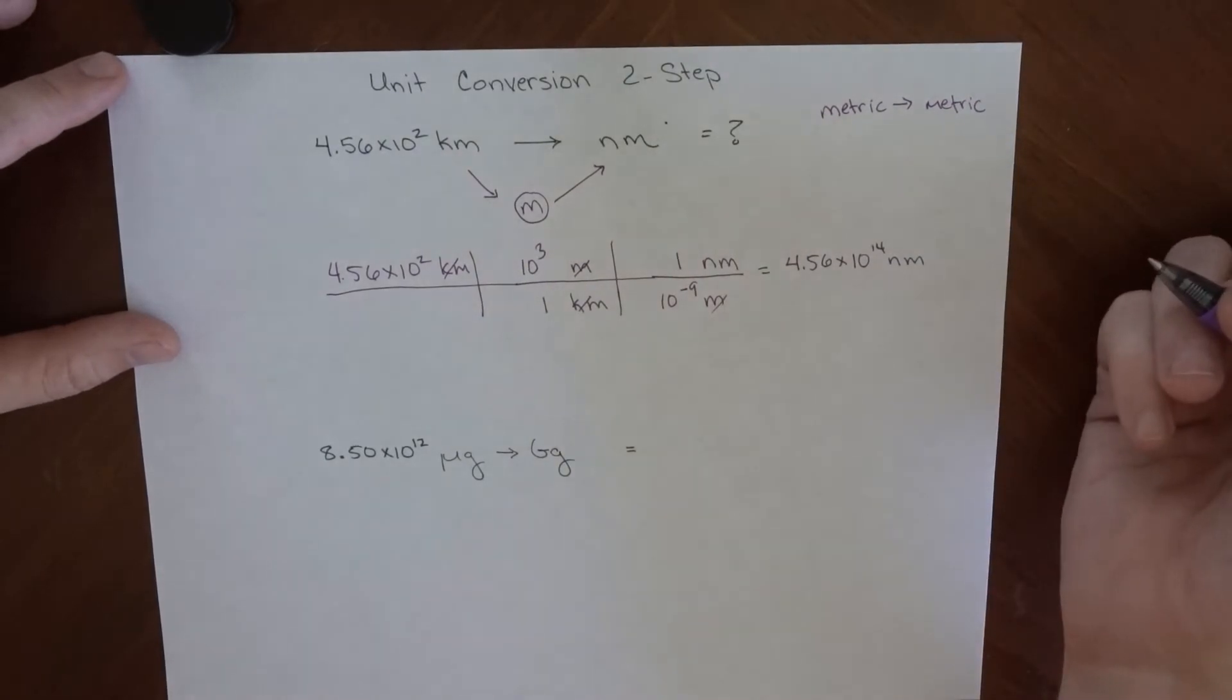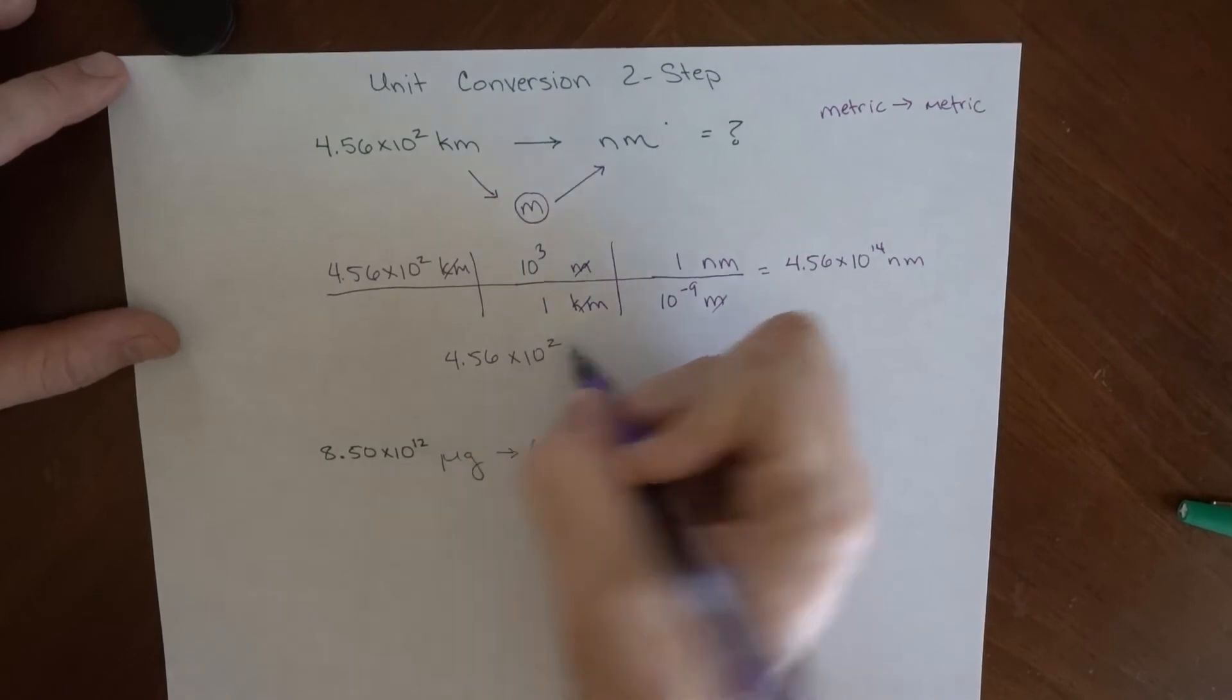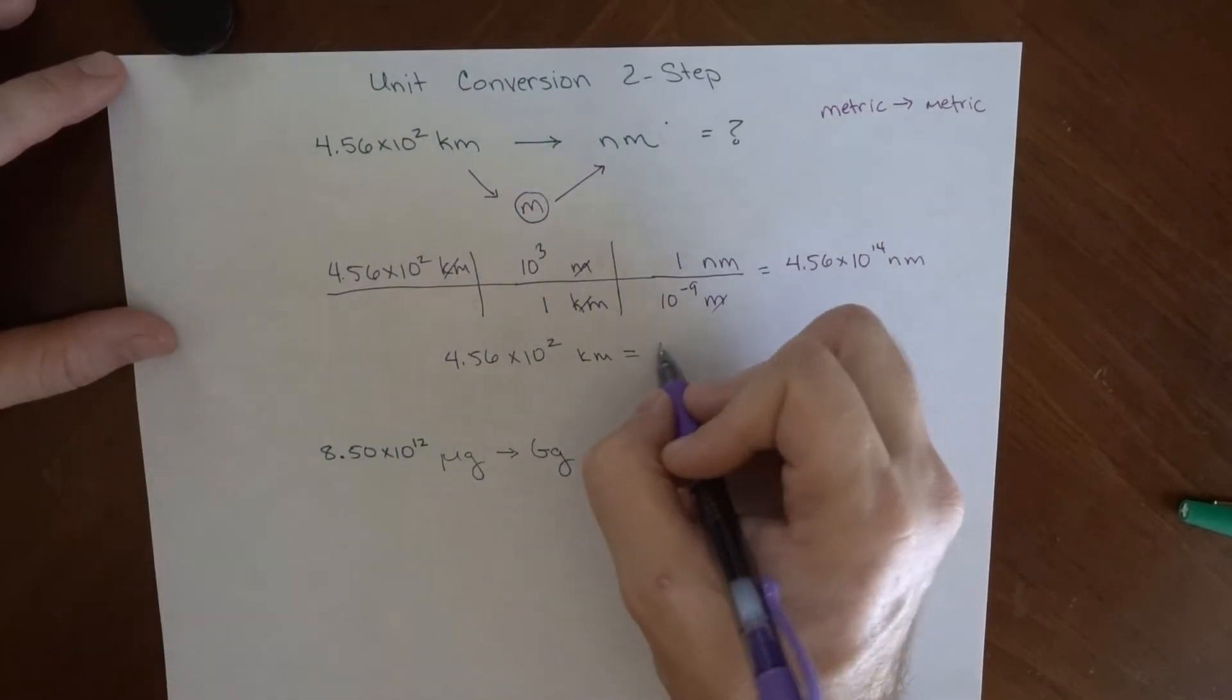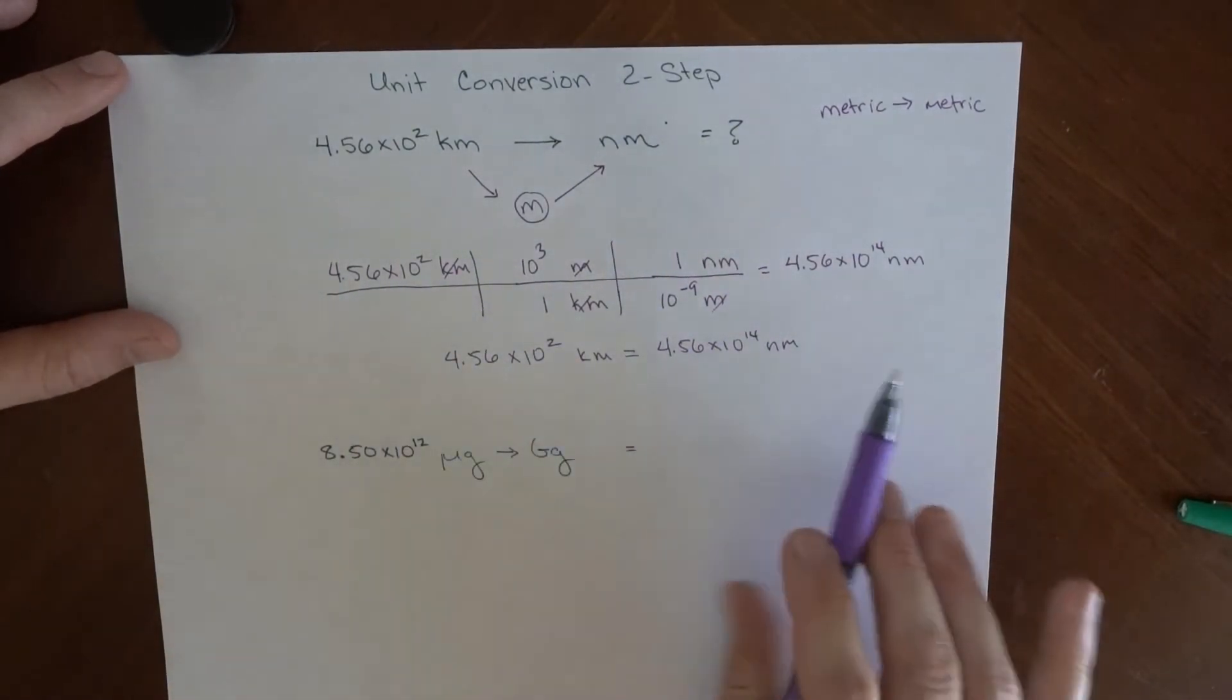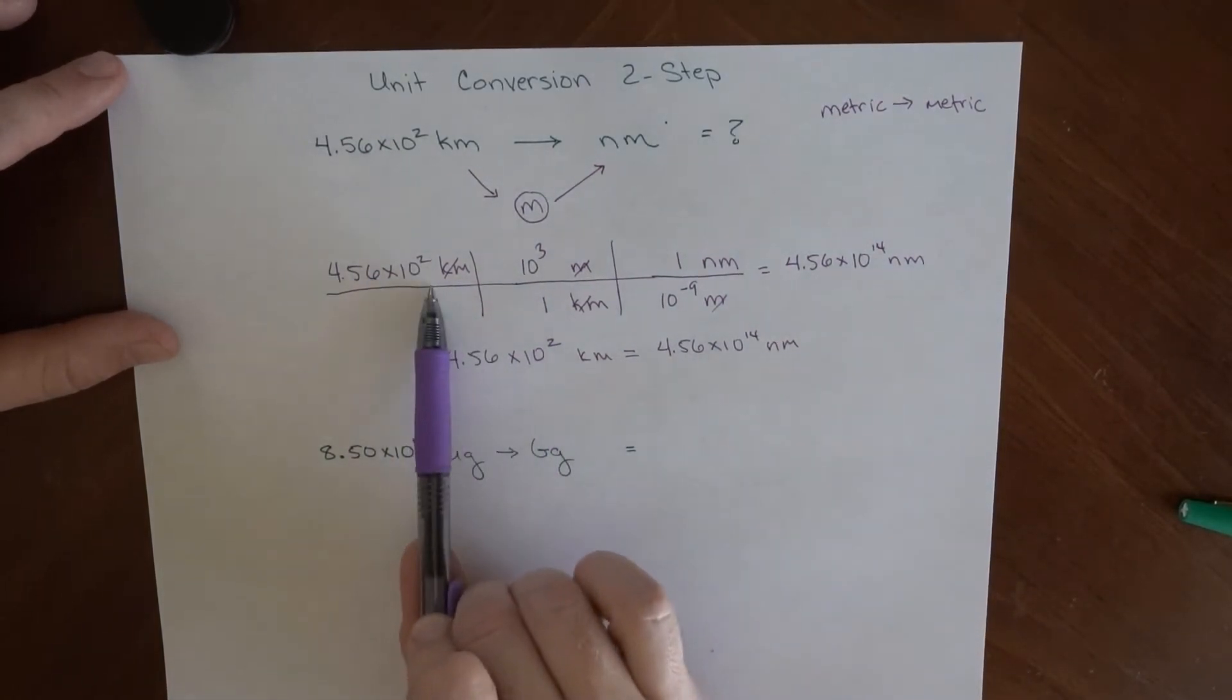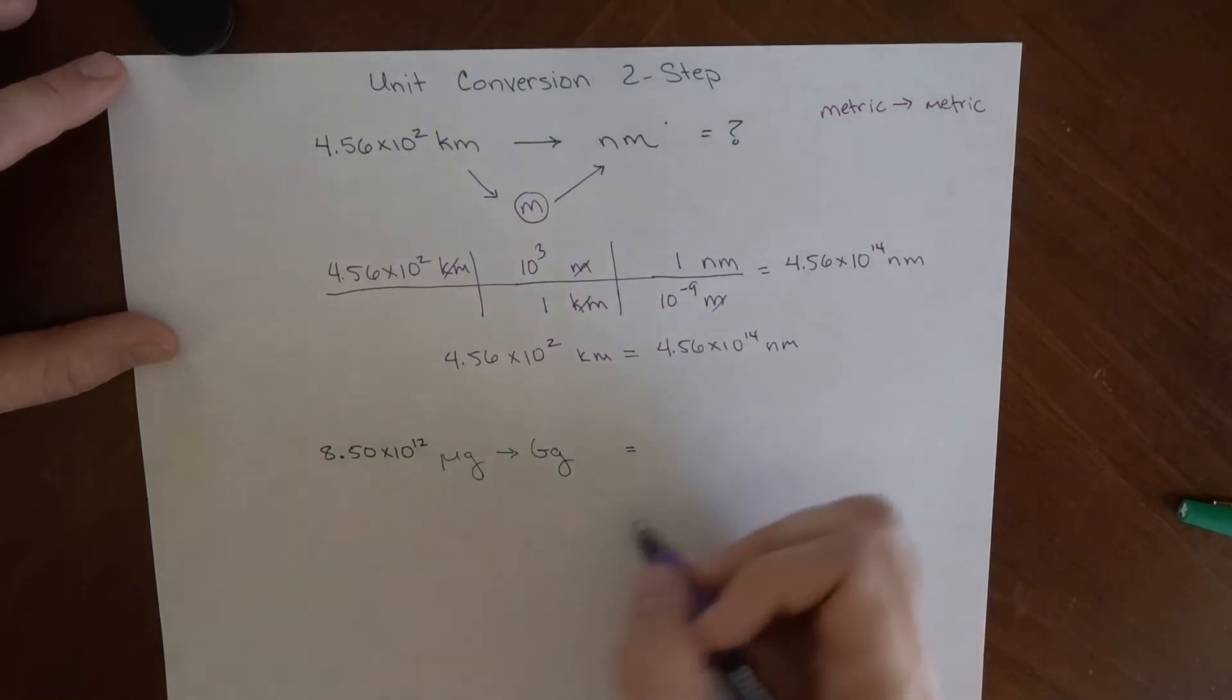One thing that's super important for you to know is that 4.56 times 10 to the 2nd kilometers is equal to 4.56 times 10 to the 14 nanometers. The distance has not changed. If this was to be like a race, or some distance I had to travel, going this many kilometers or this many nanometers, it's the same exact distance. These are all effectively multiplying by one.